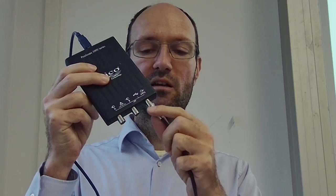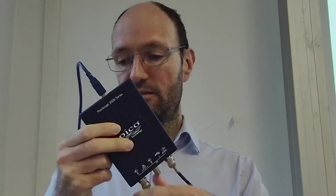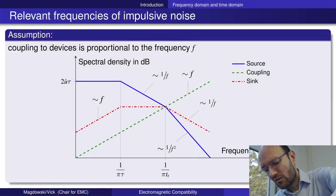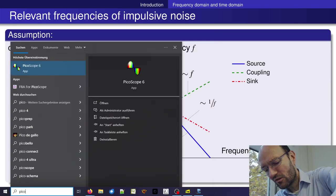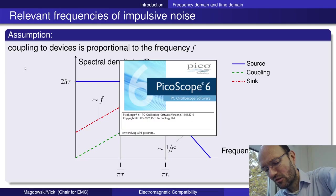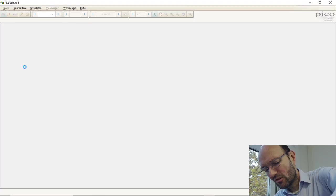The idea of my experiment is that I generate a signal with this generator using a very short cable fitted into one of the inputs, and then we can look at the different signals. Now I have to remove my mouse, connect the scope, and use my touchpad. The corresponding software is called PicoScope — that's also the name of the manufacturer.